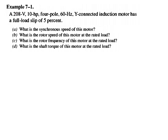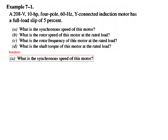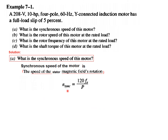Let's solve an example. A 208-volt, 10 HP, 4-pole, 60 Hz, Y-connected induction motor has a full-load slip of 5%. We need to find the synchronous speed, rotor speed, rotor frequency, and shaft torque. For the synchronous speed, using N_sync = 120 f_E / P: with f_E = 60 Hz and P = 4 poles, N_sync = 120 × 60 / 4 = 1800 RPM.